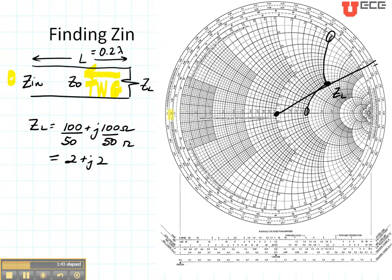So I'm going to come to this outside axis where it says wavelengths toward the generator and it tells me it goes in this direction. So this axis right here is the one that I'm going to be reading, right along there.